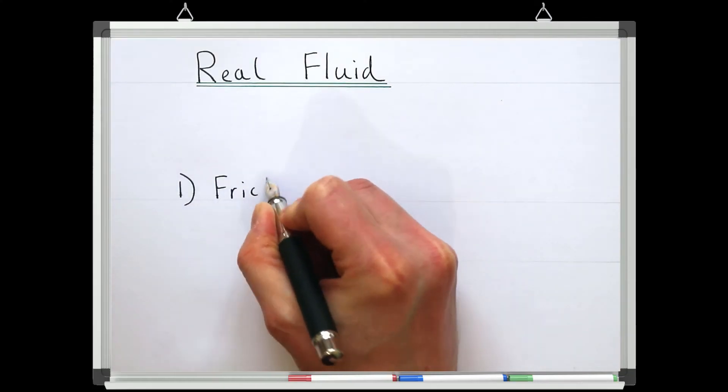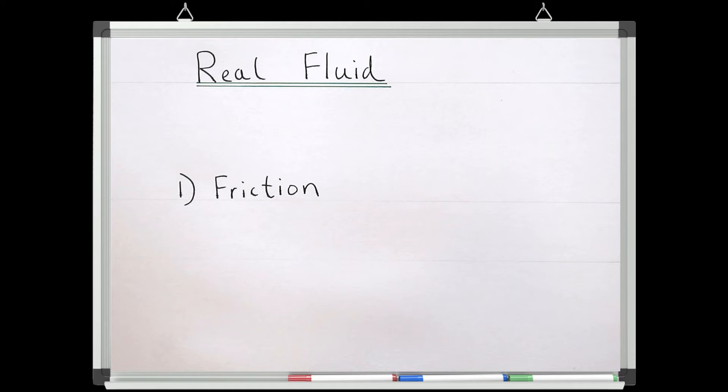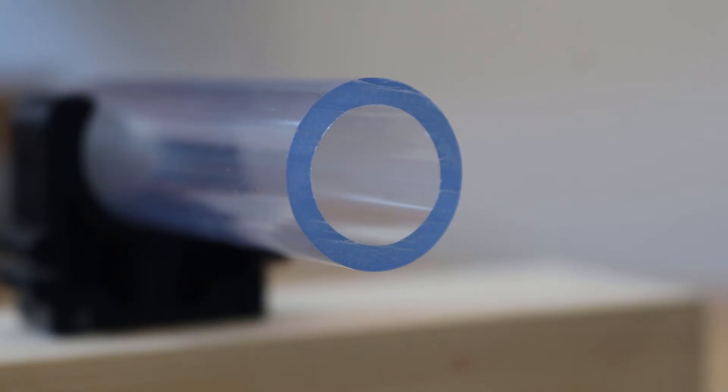Let's start by thinking about friction. If we look at the wall of my pipe, it looks pretty smooth, so we might assume that there'll be almost no friction in this pipe. But if we were able to look at this surface under a microscope, it would not look smooth at all.